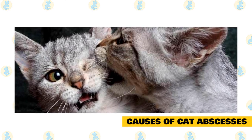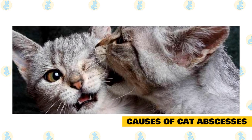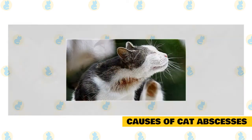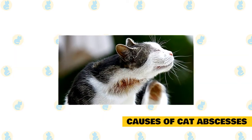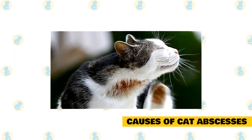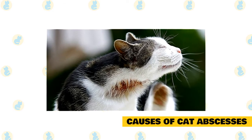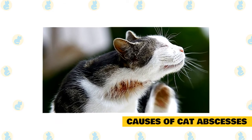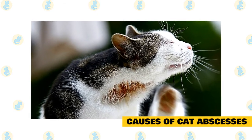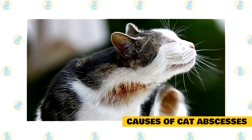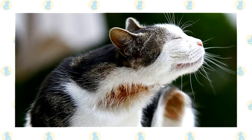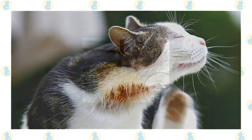These abscesses may feel hot to the touch as well as cause skin inflammation. Internal abscesses, unable to be seen from the outside of a cat's body, occur on the internal organs from inflammation, disease, and foreign objects. These are far less common than bite wounds and dental abscesses in cats but still occur.